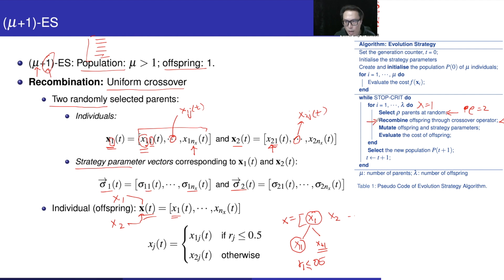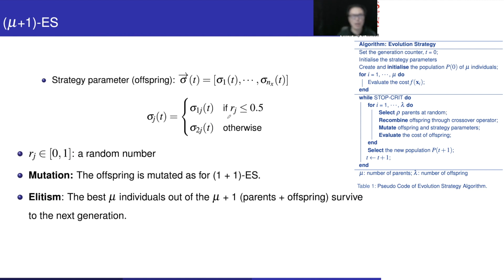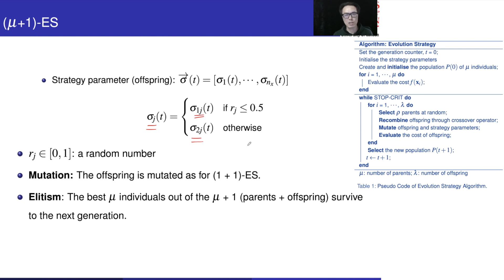Once we perform recombination, we have offspring x. We also need to generate the strategy parameter. We apply the same logic to generate sigma for the offspring. A random number r: if it is less than 0.5, we pick sigma from sigma1 of parent 1; if it is greater than 0.5, we pick sigma at position j from parent 2's strategy parameter. This is how we generate sigma for the offspring.